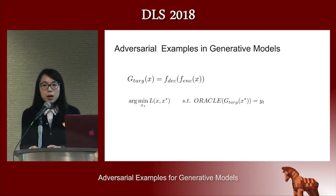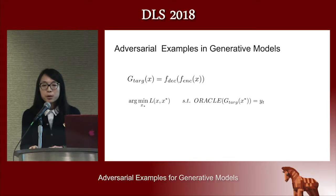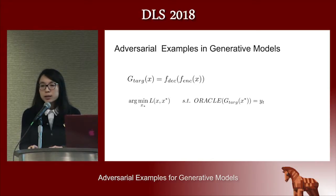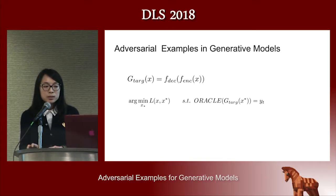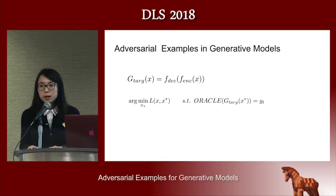Formally, we can view the whole process as two equations. First is the generative model where X is the original input and you encode and decode it — this whole process is viewed as G target, the generative model process. By constructing adversarial examples, we solve an optimization problem: minimize the distance between the original instance X and adversarial input X* such that the oracle misinterprets the reconstructed instance as adversarial target Y_T, which is different from the ground truth.